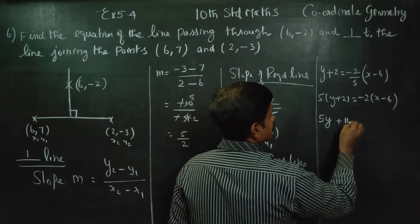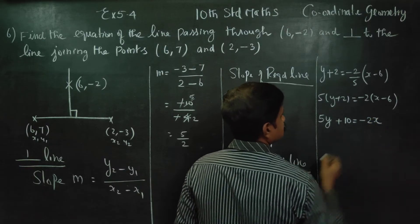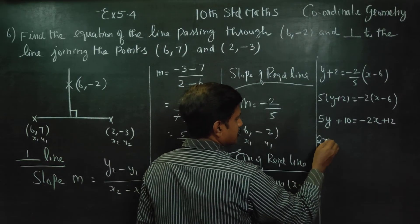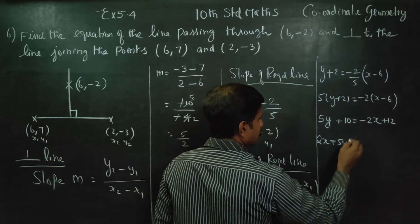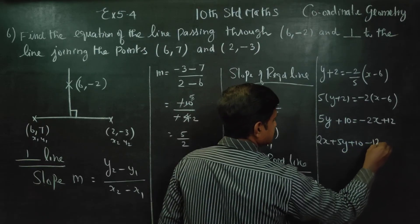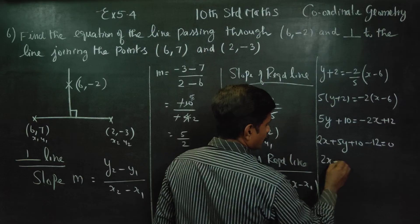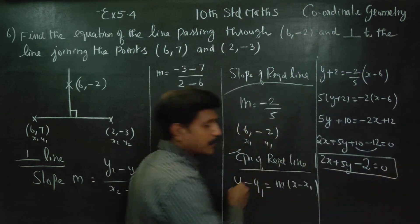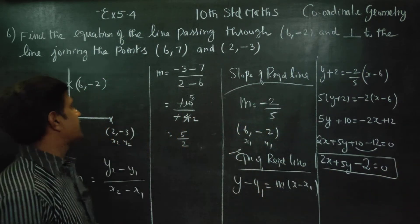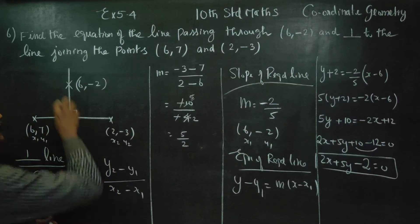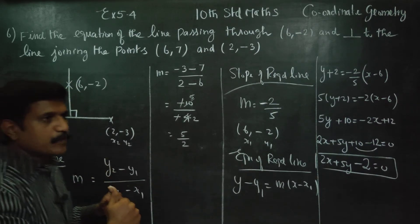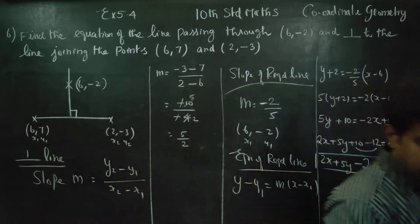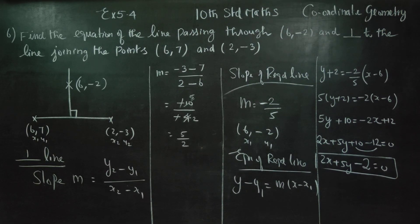Expanding: 5y plus 10 equals minus 2x plus 12. Bringing all terms to one side: 2x plus 5y plus 10 minus 12 equals 0, giving us 2x plus 5y minus 2 equals 0. This will be the equation of the straight line. So you can find the equation of the straight line. Thank you.